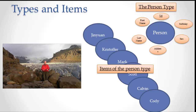The first part of information modeling is defining types. The second part of information modeling is defining the relationships between items of those types. So first let me give you this idea — I've talked a little bit about it before, let me talk about it again — the idea of types versus items.